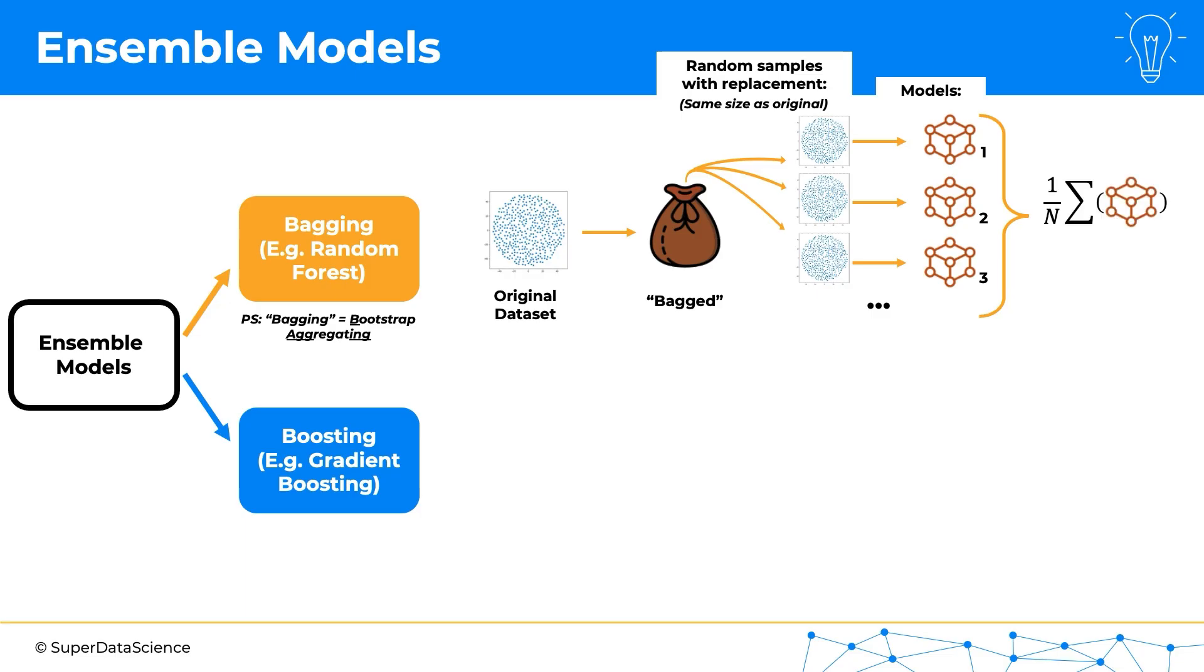And what we're going to do is we're going to take the average of their model. So our final ensemble model in this case will be the average of all of the models. So that's how bagging works or bootstrap aggregating.